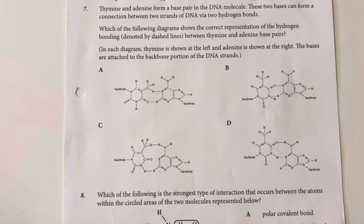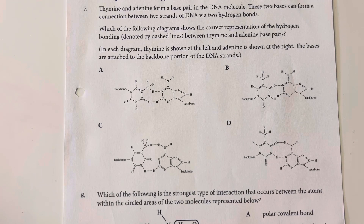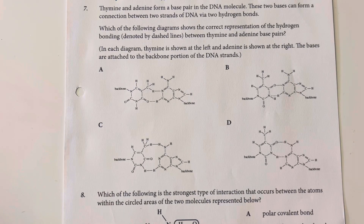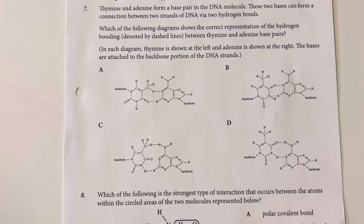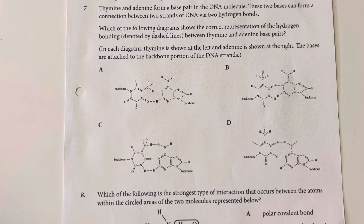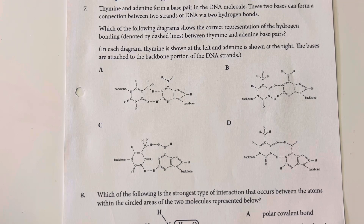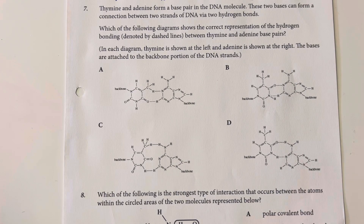Thymine and adenine form a base pair in DNA molecules. These two bases can form a connection between two strands of DNA via two hydrogen bonds. Which of the following diagrams show the correct representation for the hydrogen bonding — denoted by dashed lines — between thymine and adenine base pairs? In each diagram, thymine is shown on the left, adenine is shown on the right. The bases are attached to the backbone portions of the DNA strands.